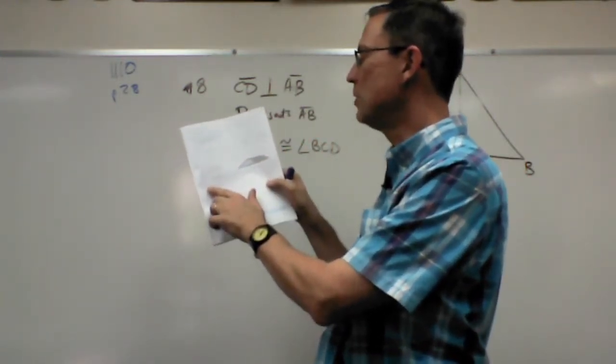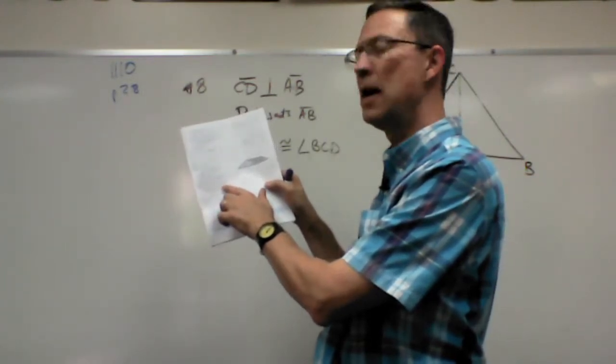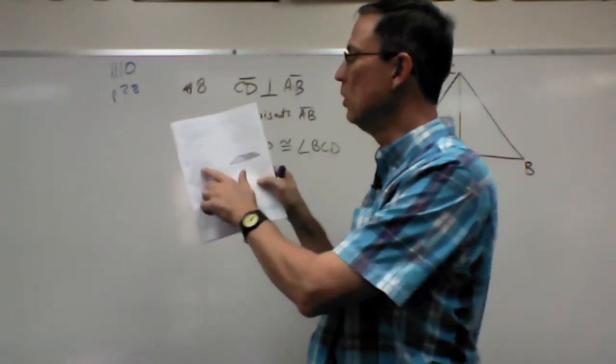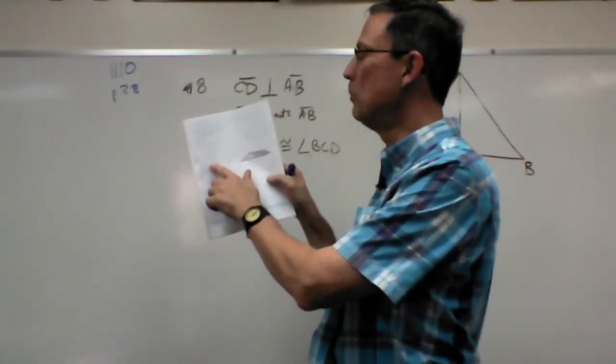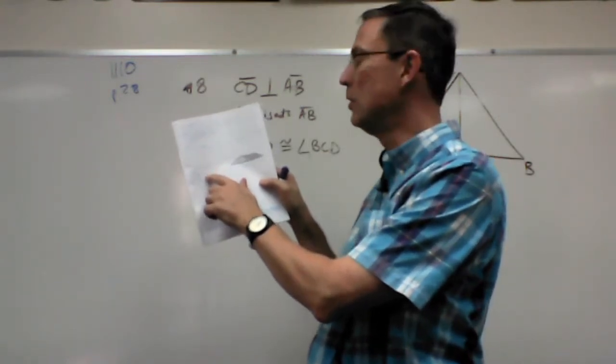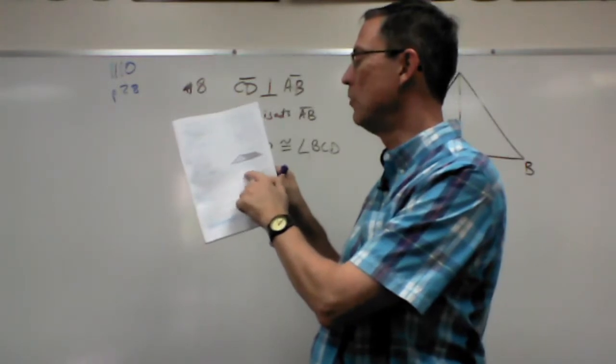But look what happens here in step two. It says ADB and ADC are right angles. And how do we know that? Well, there's a clue up here with the perpendicular lines. If two line segments are perpendicular, they form right angles. I think that's a definition of perpendicular.